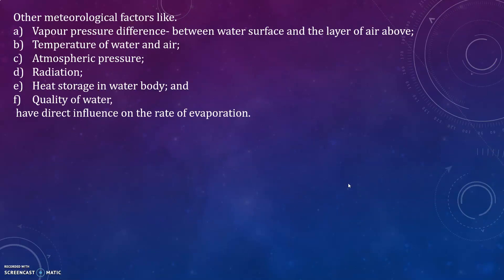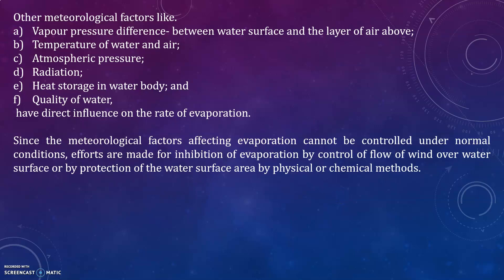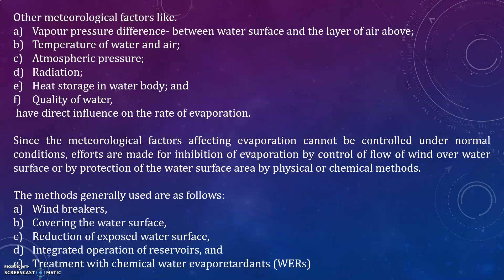Other meteorological factors such as vapor pressure difference, temperature of water and air, atmospheric pressure, radiation, heat storage in the water body, and water quality directly influence the rate of evaporation. Since meteorological factors cannot be controlled under normal conditions, efforts are made to inhibit evaporation by controlling wind flow over the water surface or by protecting the surface area by physical or chemical methods. Methods generally used include windbreakers, covering the water surface, reduction of exposed water surface, integrated operation of reservoirs, and treatment with chemical evaporation retardants.